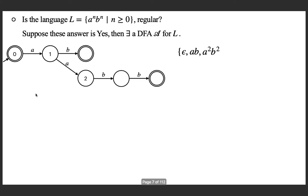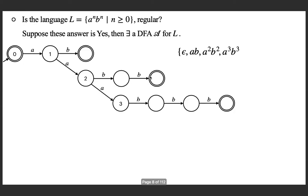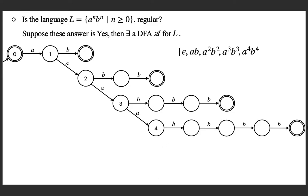The next string is A-squared B-squared, then A-cubed B-cubed, then A-to-the-4 B-to-the-4, and it goes on like that. All the other transitions — A and B — are defined from these states to a special dead state, and there is a single self-loop for A and B. Note that for accepting epsilon, the first state is the accepting state itself.